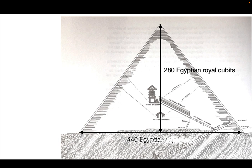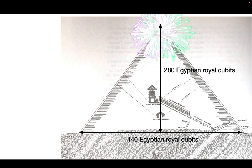And then the original width, based on the casing stones, is 440 Egyptian royal cubits. These numbers are well known.